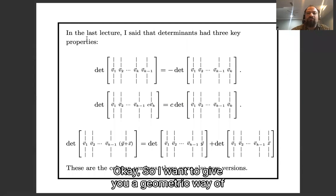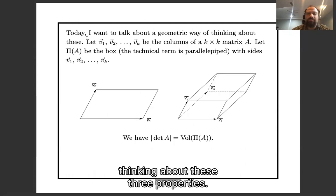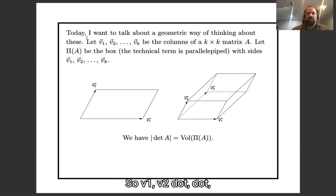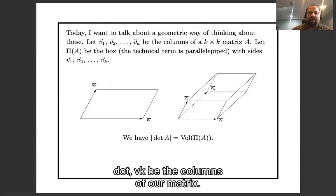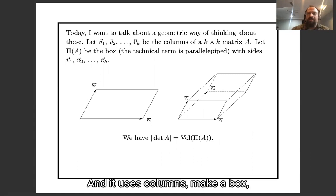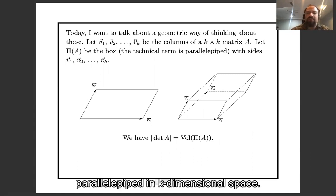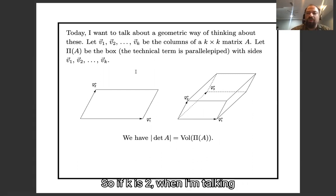I want to give you a geometric way of thinking about these three properties. Let v1, v2, ..., vk be the columns of our matrix. I'm going to use those columns to make a box — the technical word is a parallel pipette — in k-dimensional space. If k is two, what I'm talking about is a parallelogram.